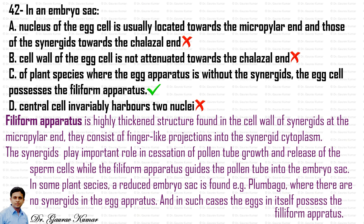In some plant species, for example in Plumbago, a reduced embryo sac is found where there are no synergids in the egg apparatus. In such cases, the egg itself possesses the filiform apparatus. Hence the answer is option C.